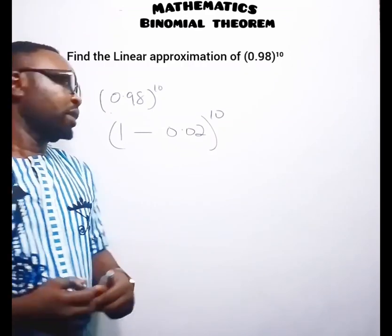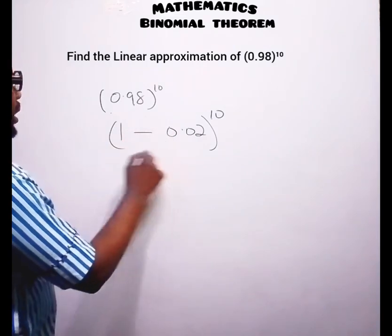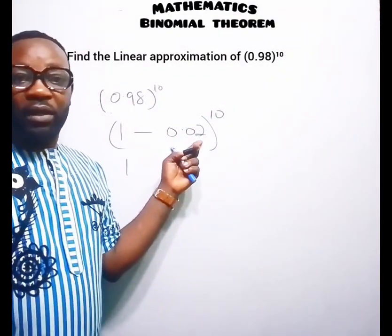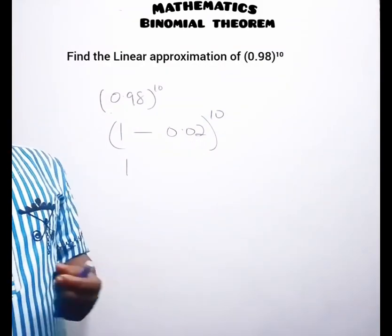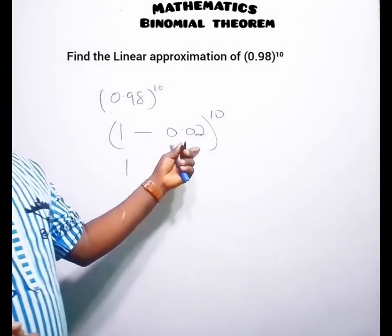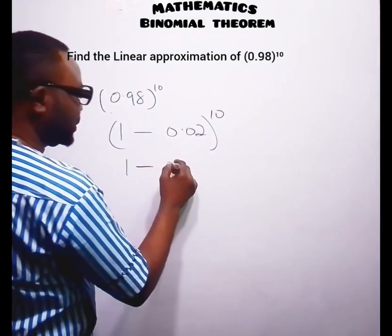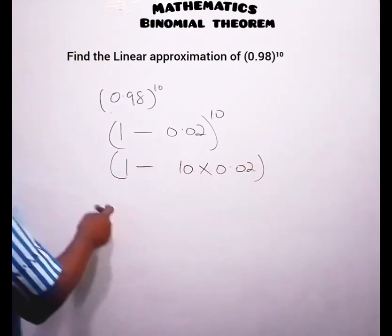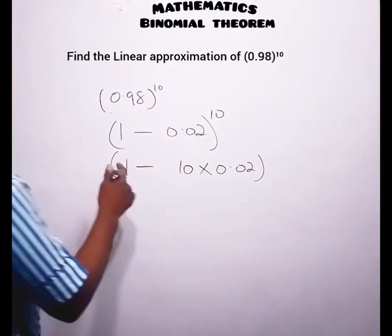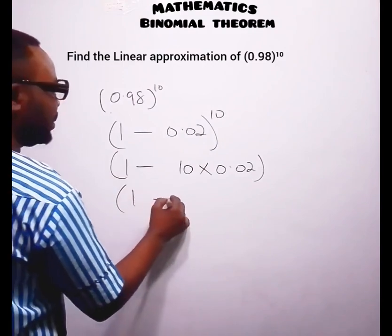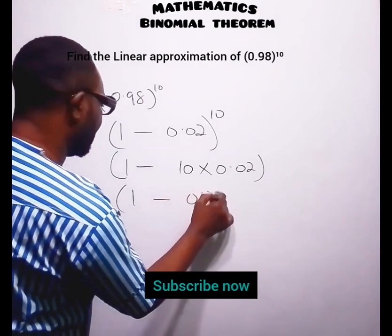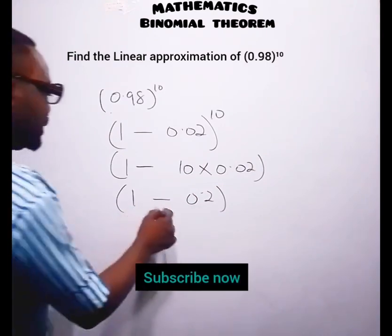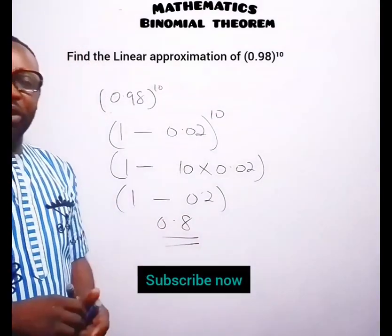Since 0.02 is small, x², x³ and higher terms are negligible, so we can apply linear approximation. The expression (1 minus 0.02) raised to the power of 10 becomes 1 minus 10 multiplied by 0.02. Ten times 0.02 equals 0.2, so we have 1 minus 0.2, which equals 0.8. That is the answer to this question.